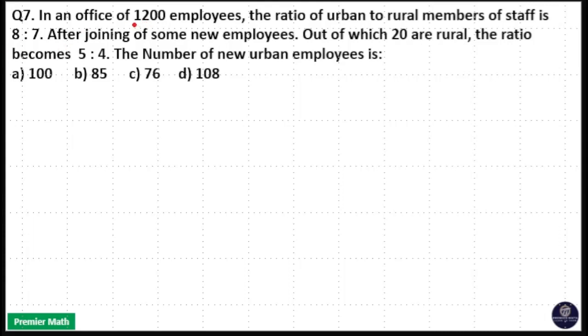In an office of 1200 employees, the ratio of urban to rural members of staff is 8 to 7. After joining some new employees, out of which 20 are rural, the ratio becomes 5 to 4. The number of new urban employees is: